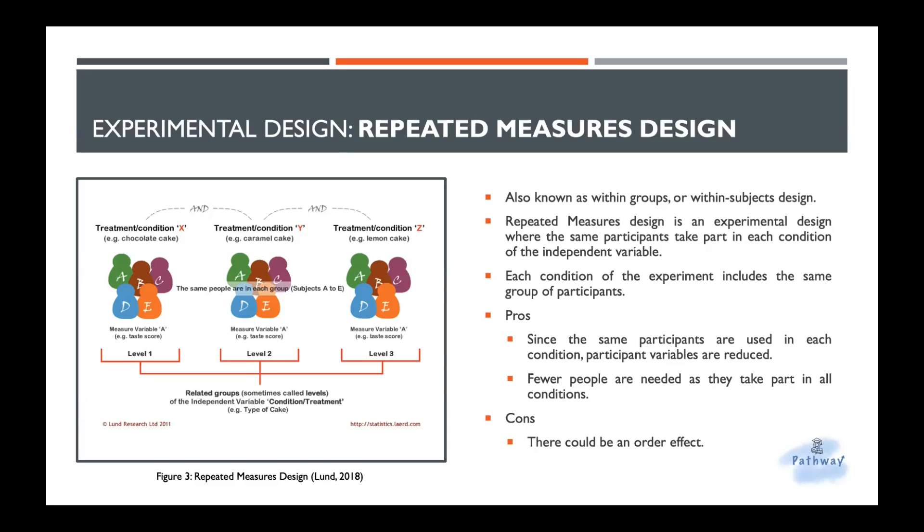So imagine an experiment with two conditions, learning while listening to music and learning with no music. In randomization, participants are randomly allocated to do either condition, like music followed by no music, or vice versa. As somebody does each order, any advantage of doing one of the conditions first will probably be evened out in the results. So to be more certain that possible effects are evened out, counterbalancing can be used.